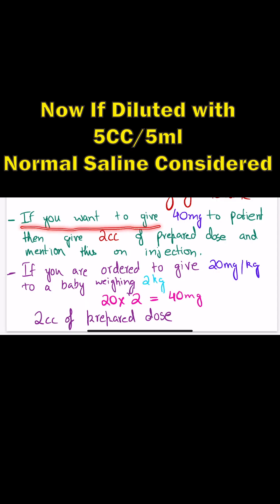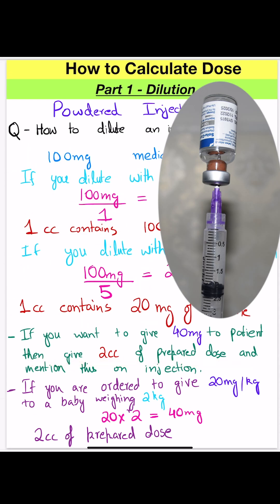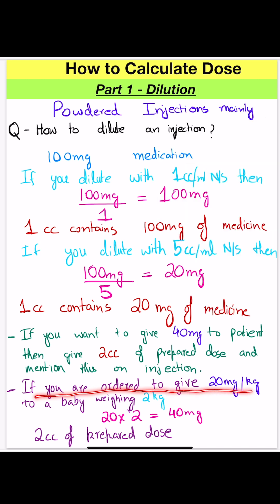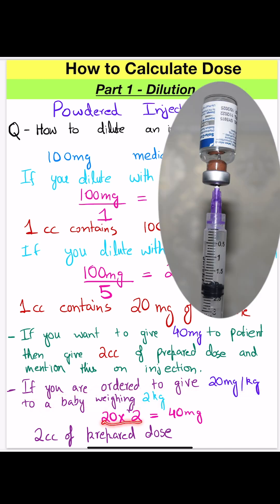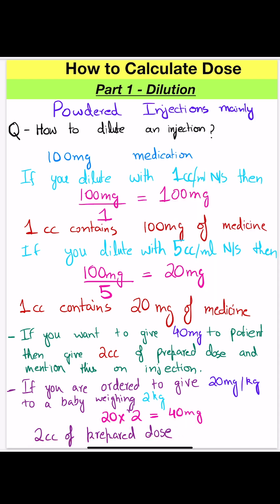Now if you want to give 40 mg to the patient, give 2 cc of the prepared dose and mention this on the injection. If you are ordered to give 20 mg per kg to a baby weighing 2 kg — 20 multiplied by 2 is 40 mg — that is 2 cc of the prepared dose again.